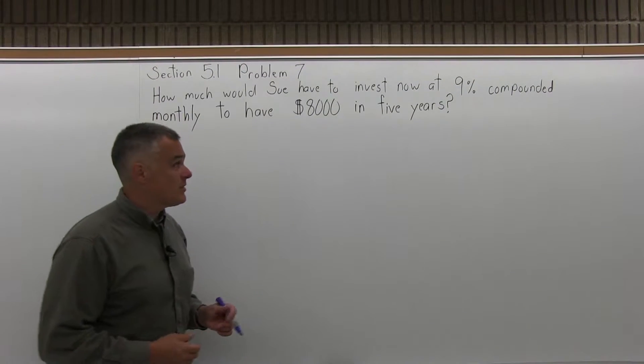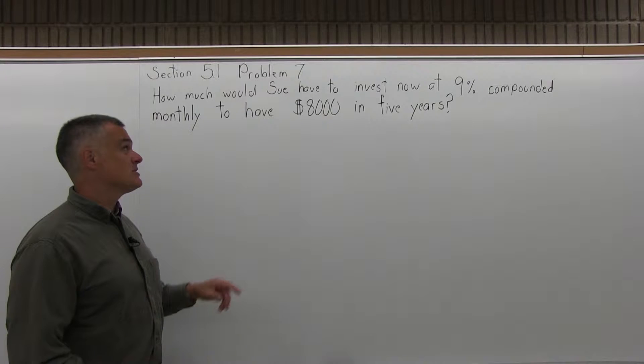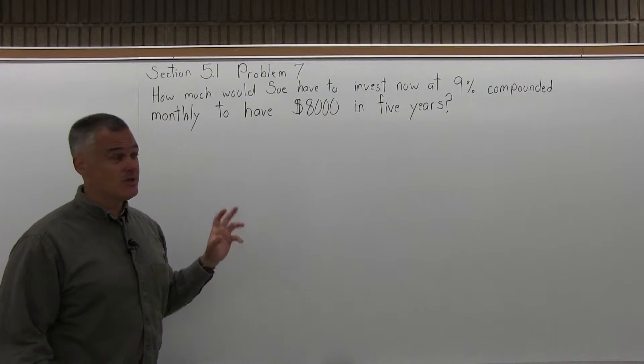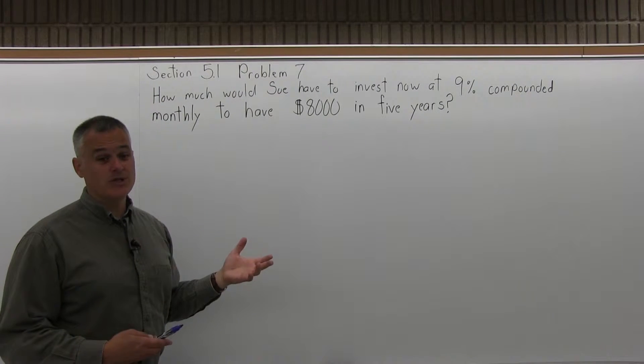If you've tried the previous problem, it's almost the same. The previous one says how much does Sue have to invest now at 9% simple interest to have $8,000 in five years? So the difference is whether it's compounded or simple interest.